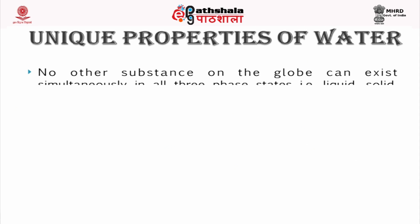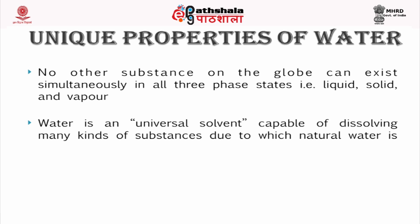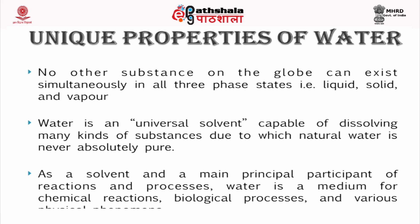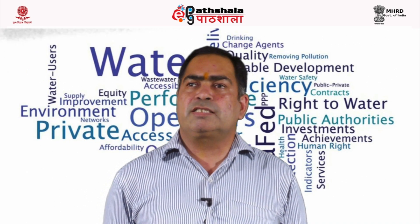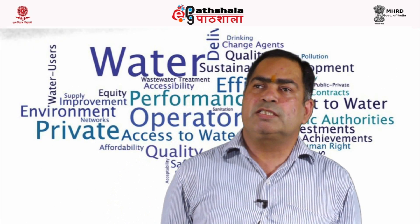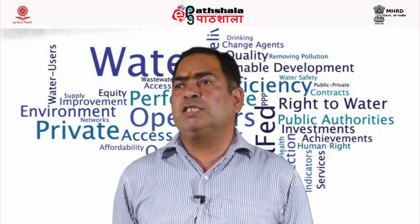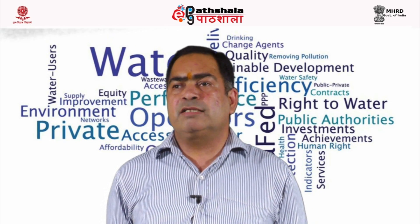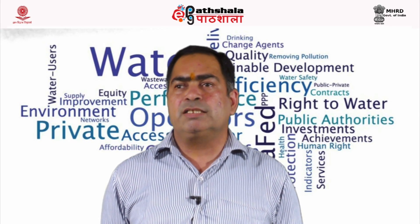No other substance on the globe can exist simultaneously in all three phase states — liquid, solid and vapor. Water is a universal solvent, capable of dissolving many kinds of substances, due to which natural water is never absolutely pure. As a solvent and main participant of reactions and processes, water is a medium for chemical reactions, biological processes and various physical phenomena. The property of surface tension refers to water molecules at the surface next to air holding closely together, forming an invisible film. Surface tension is denoted by the Greek letter gamma, and the magnitude F of the force per unit length over which it acts.